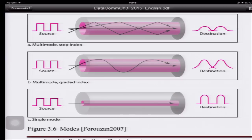The third type is single mode fiber, the newest technology. The core is made very, very small so that only light traveling straight through can propagate — no reflected paths can exist. At the destination there is no dispersion, though the square pulse becomes slightly smoother at the edges due to the finite bandwidth of the fiber. This allows a much faster data rate than the other two types.